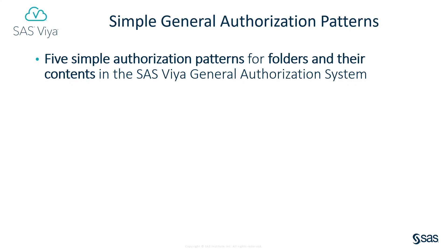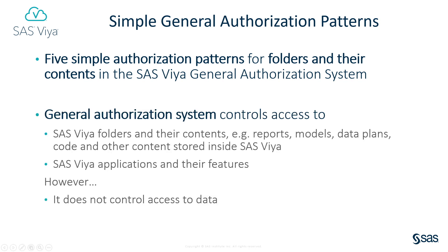In this video, we'll look at five simple authorization patterns for folders and their contents in the SAS Viya general authorization system. SAS Viya has two authorization systems. The general authorization system controls access to SAS Viya folders and their contents — things like reports, models, data plans, and so on. It also controls access to SAS Viya applications and their features. However, it's not used to control access to data stored in SAS Cloud Analytics Services.